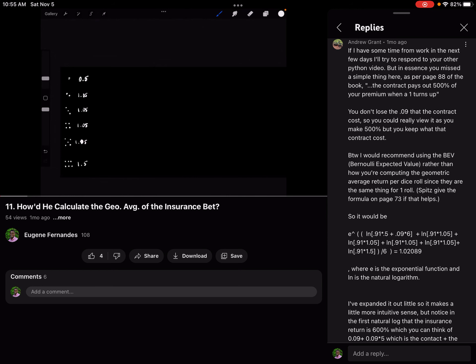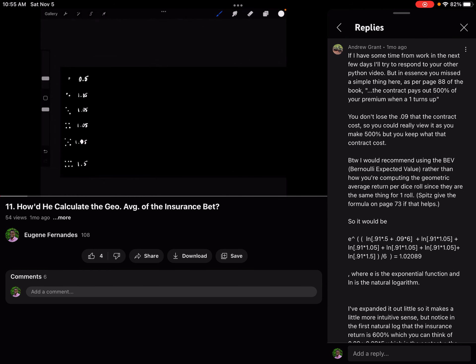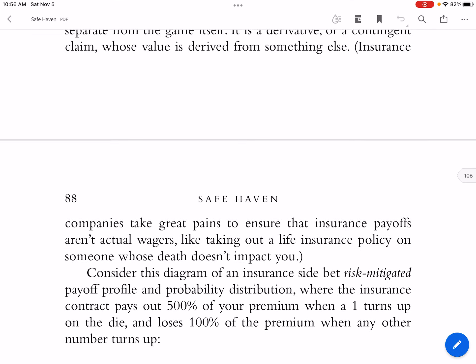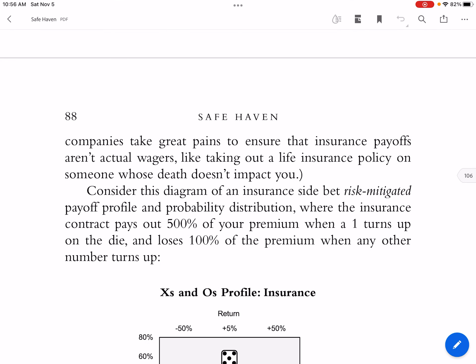It turns out that one big mistake I was making was interpreting what Spitznagel says when he writes the contract pays out 500% of your premium when a 1 turns up, and that is on page 88.